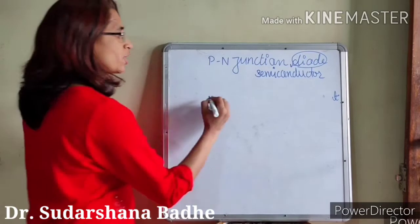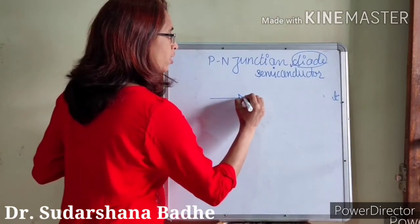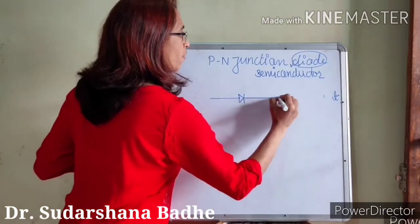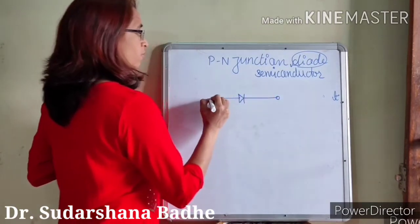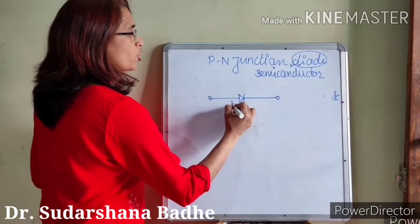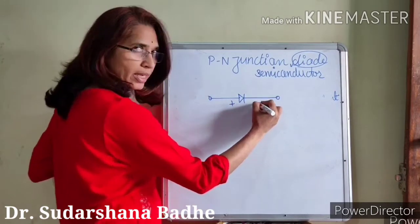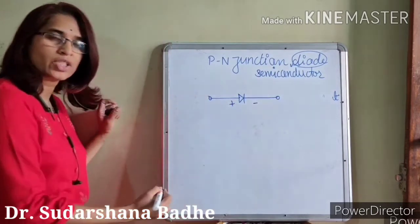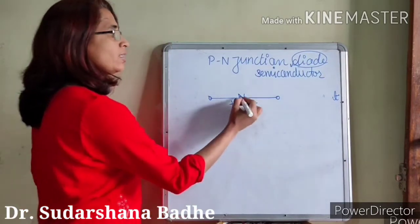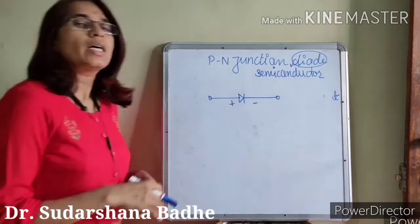The symbol of the PN junction diode is an arrowhead with a line. This is the positive terminal of the PN junction diode, this is the negative terminal, and this arrowhead indicates the flow of current.